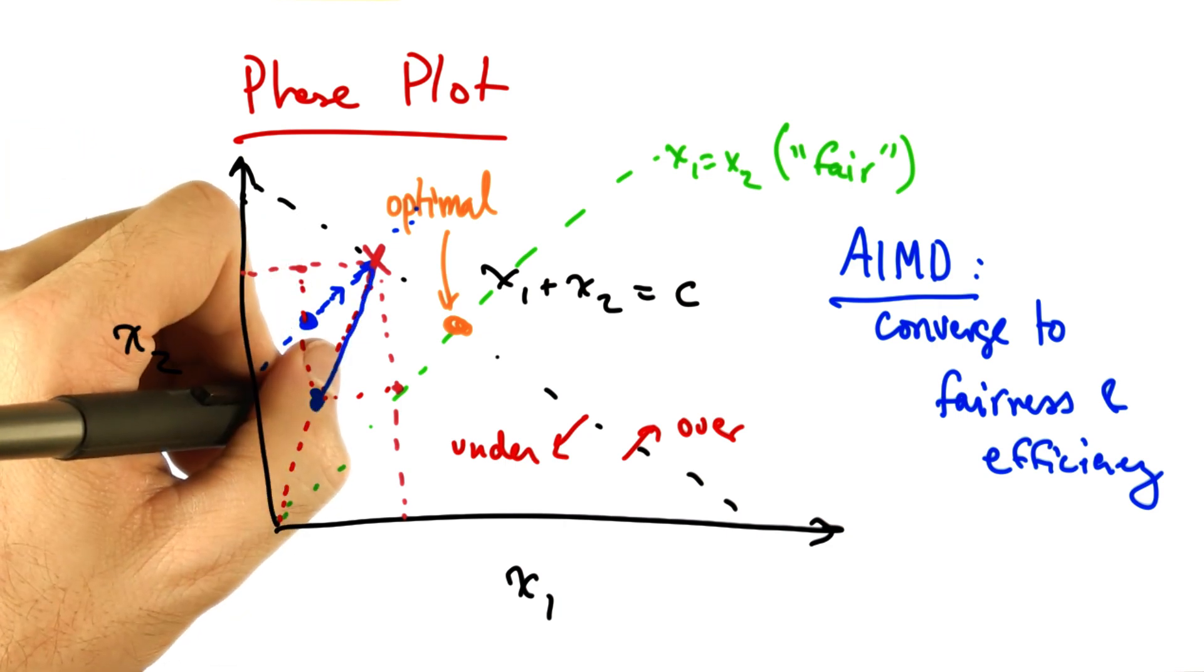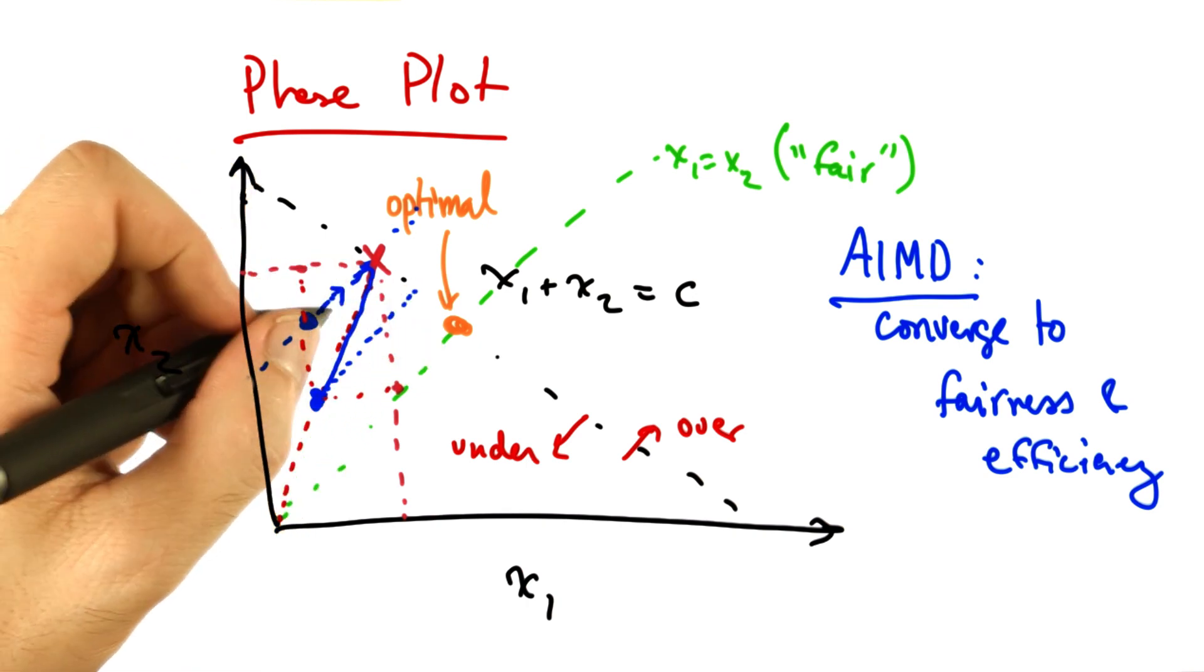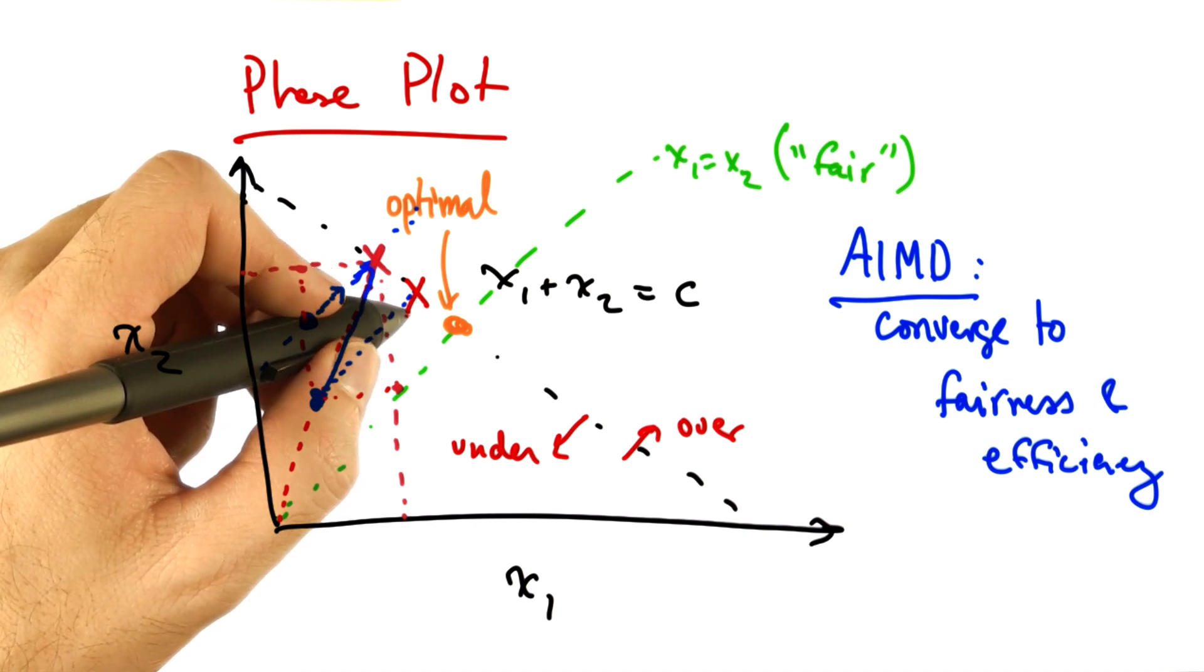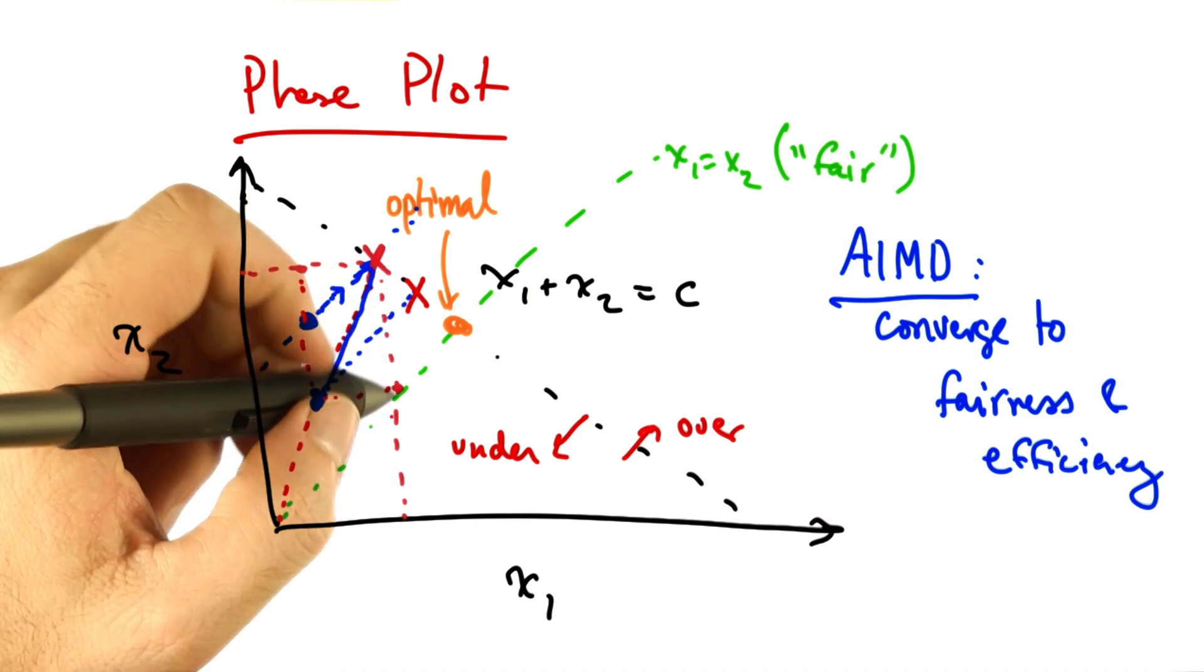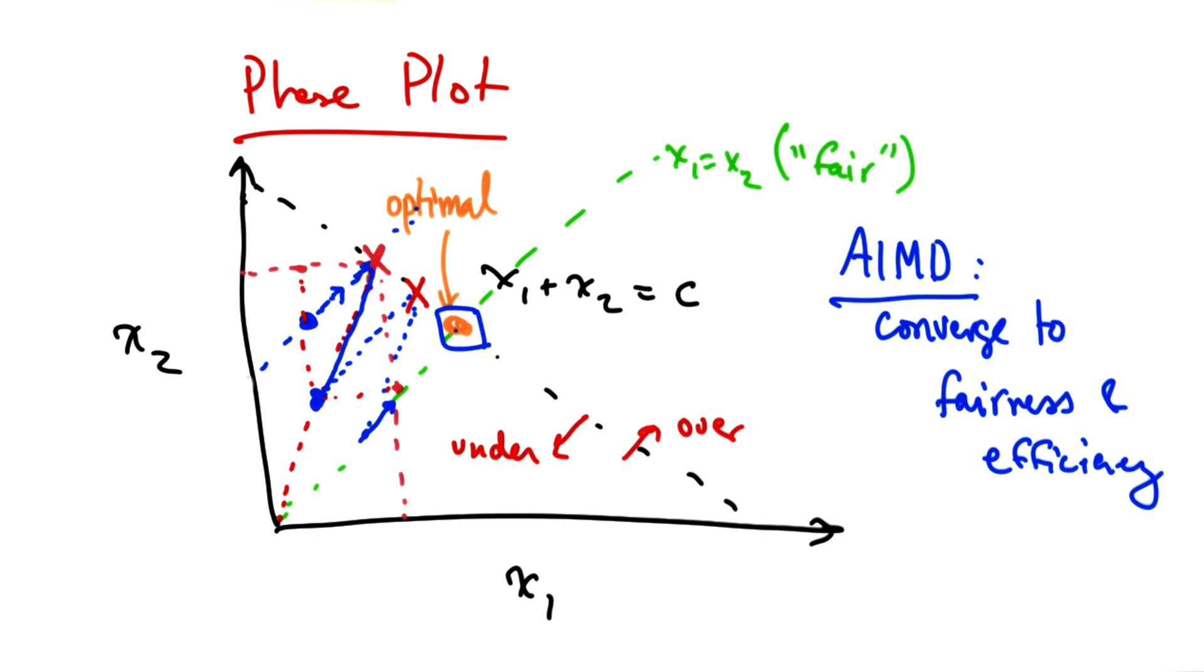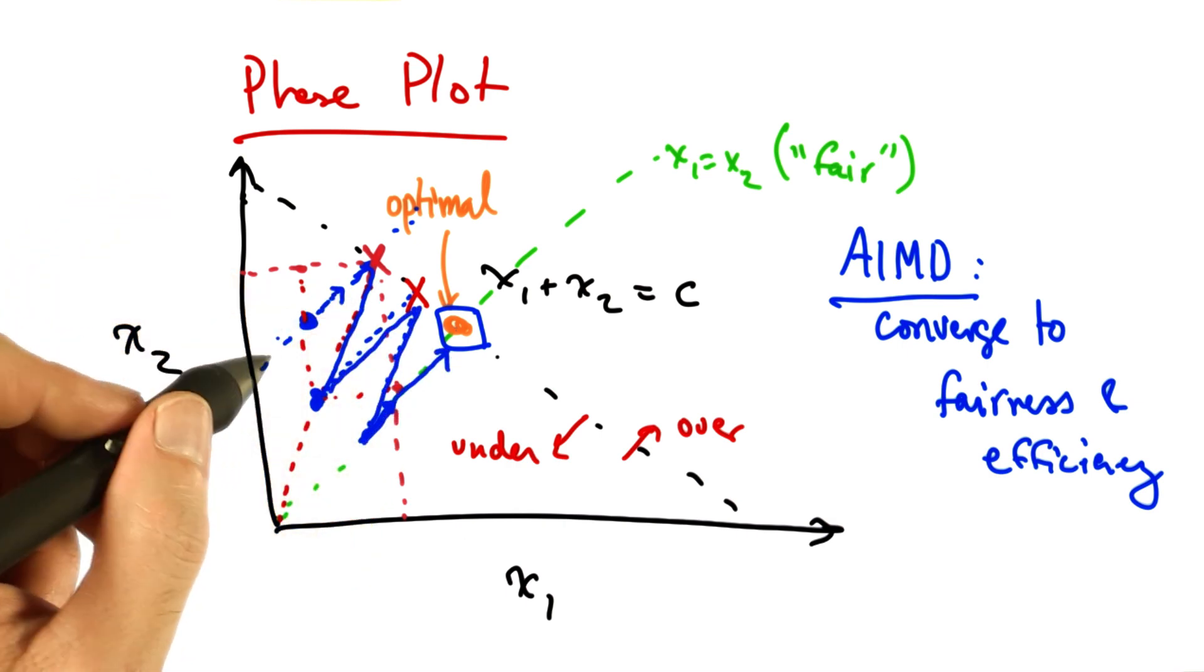At this point, the senders will again increase their sending rate along a line that's parallel to x1 equals x2, until they hit overload again. At which point, they will again retreat towards the origin. You can see that eventually, the senders will reach this optimal operating point through the path delineated by the blue line.